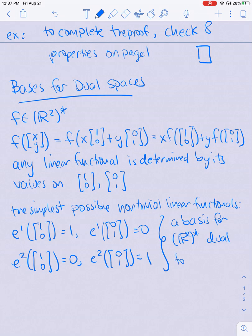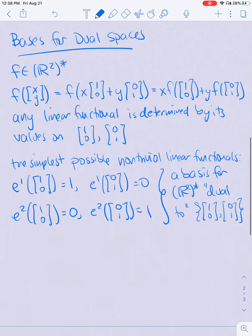which we say is dual to the standard basis (1, 0), (0, 1). So to check that these form a basis, we need to check that they span R² star and that they are linearly independent.